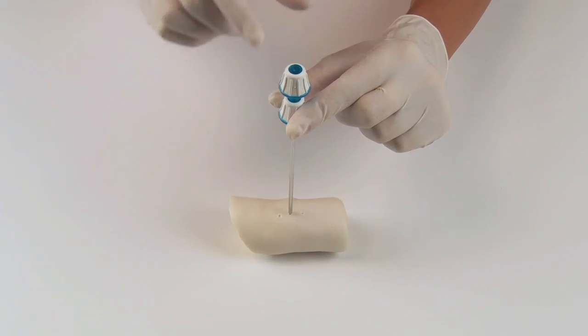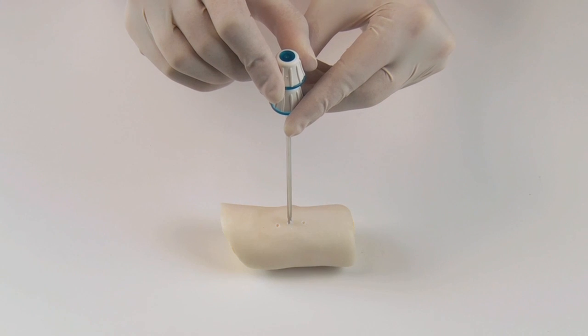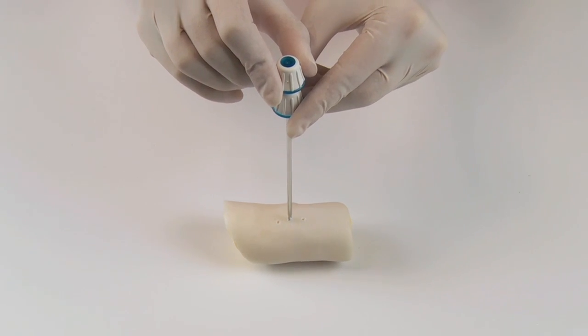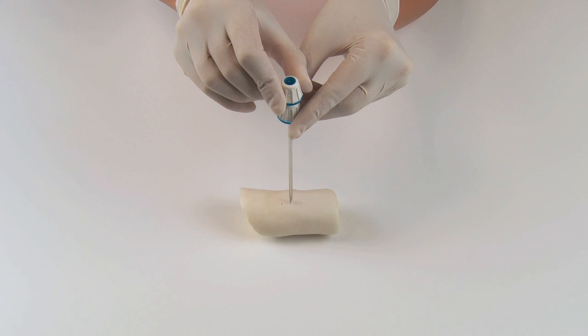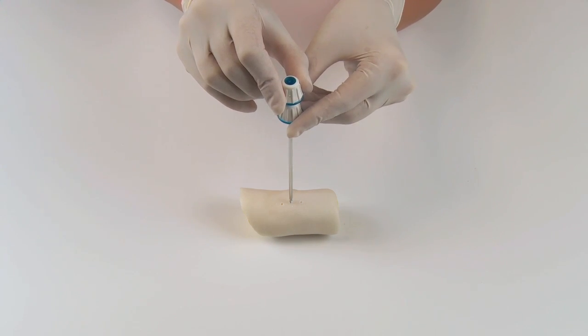Before drilling further, retract the penetration cannula to allow the wobbling movement of the eccentric drill. From an engineering standpoint, retracting the cannula exposes the eccentric drill bit, which allows the drill to make a hole that is larger than the cannula itself.